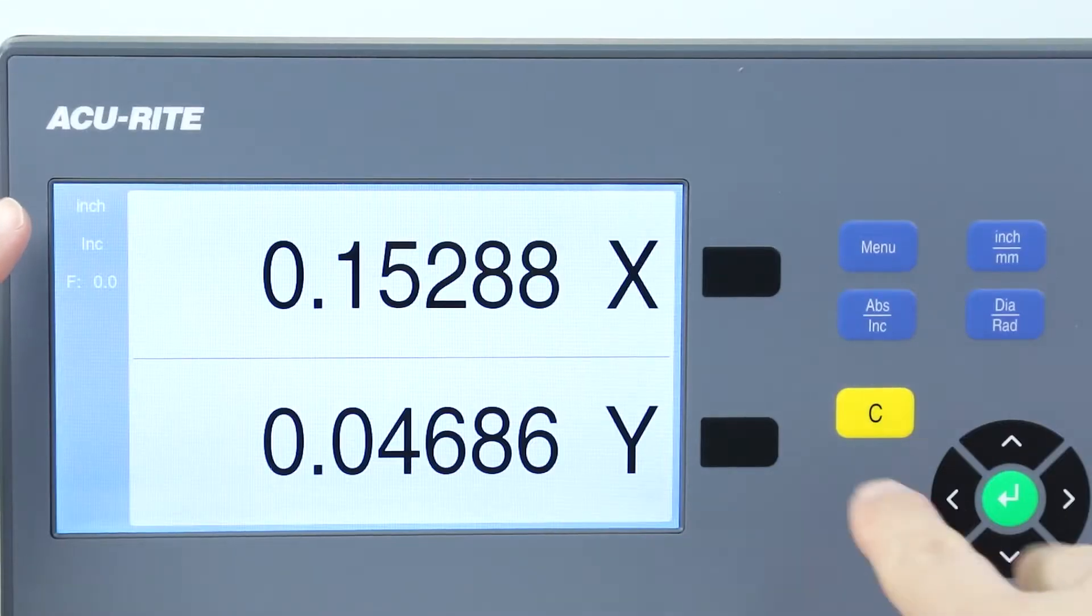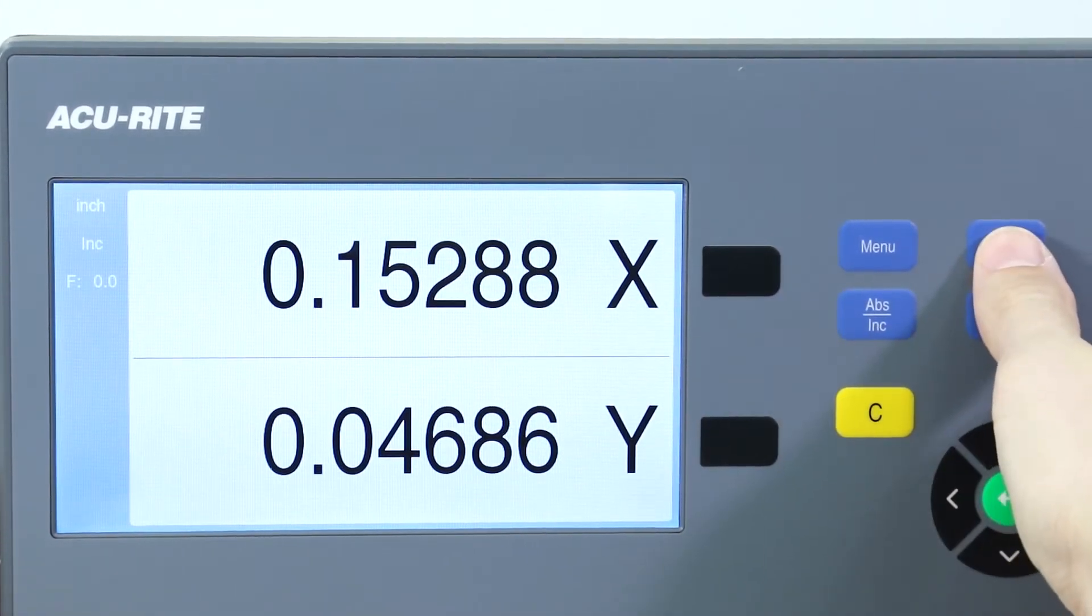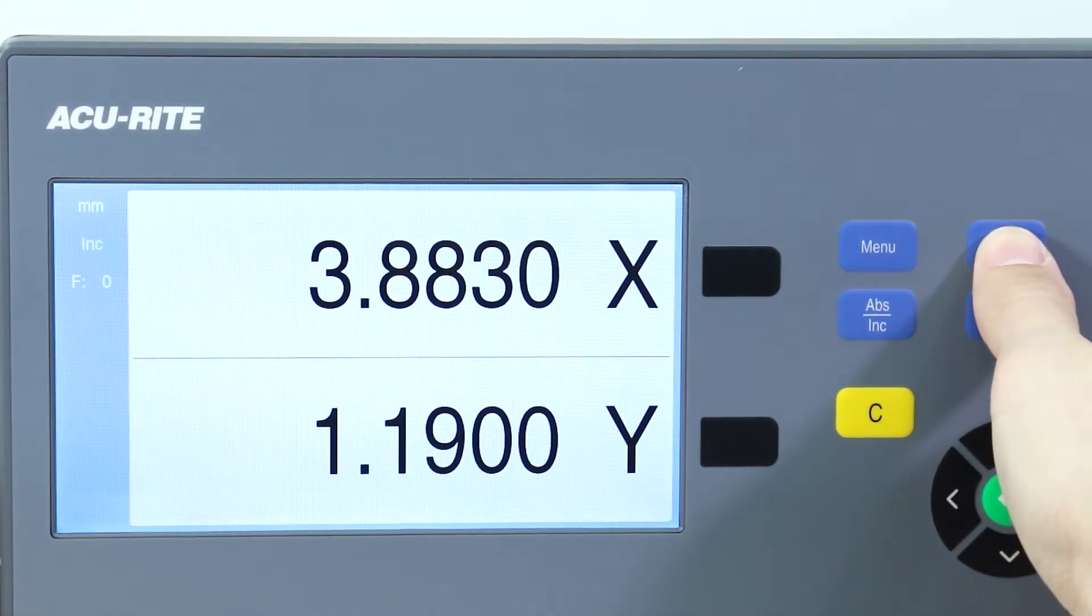In the top corner you can see if we're displaying inches or millimeters, and you can switch between the two at any time with the dedicated button right here.